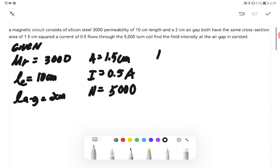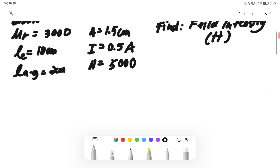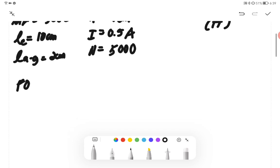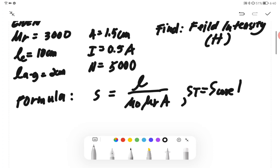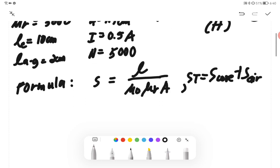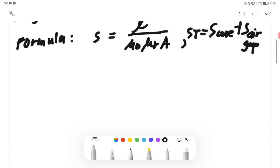And we are tasked to find the field intensity. So first formula we should know: S equals L over μ₀μᵣA. Okay, so we have two of this. We have S total equals S core plus S air gap.